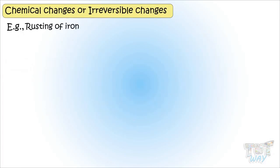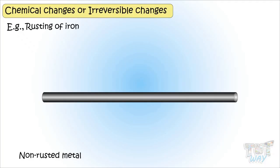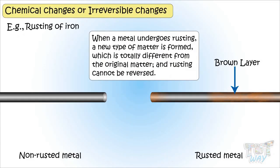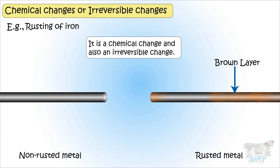Here is another example: rusting of iron. Here we have a metal which is not rusted, and here we have a metal which is rusted. This brown rough layer you see on the metal is rust. When a metal undergoes rusting, a new type of matter is formed which is totally different from the original matter, and rusting cannot be reversed. So rusting is a chemical change and also an irreversible change.